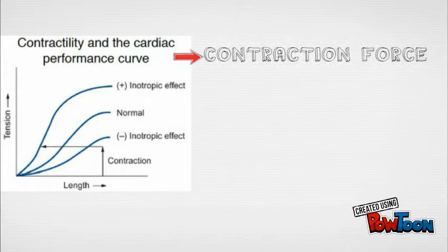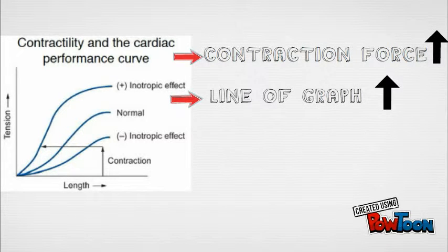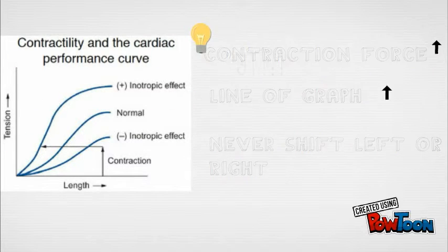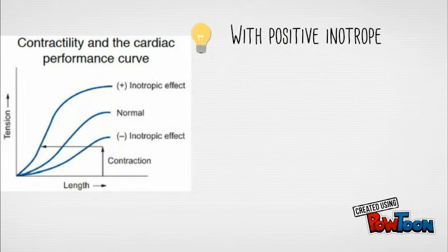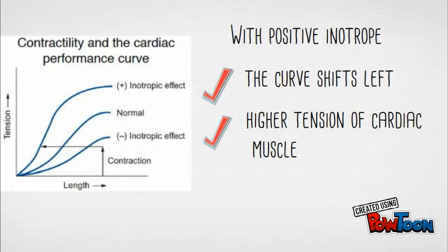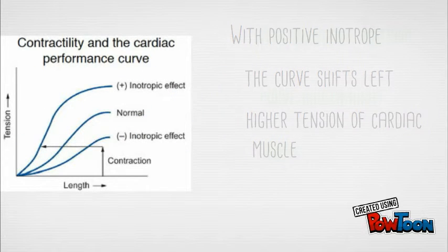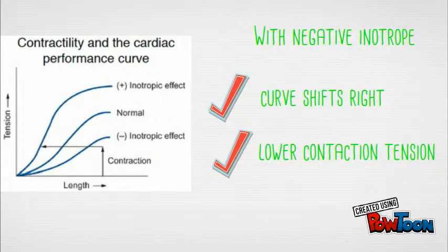When the contraction force increases, the line of the graph increases and will never be shifted. But with the presence of positive inotropes, the curve will be shifted to the left. With the presence of negative inotropes, the graph will be shifted to the right.